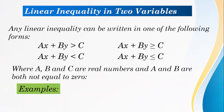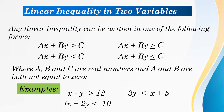Here are some examples of linear inequalities in two variables: x minus y greater than 12, 4x plus 2y less than 10, 3y less than or equal to x plus 5, and x greater than or equal to 2y minus 1.